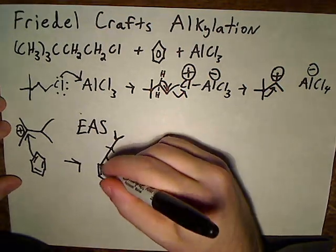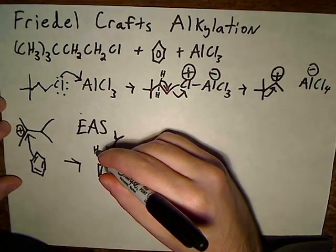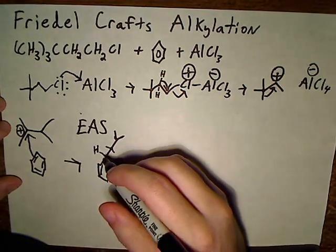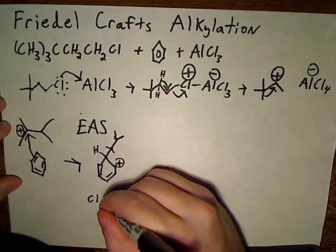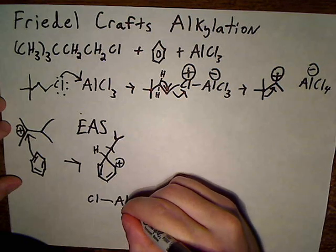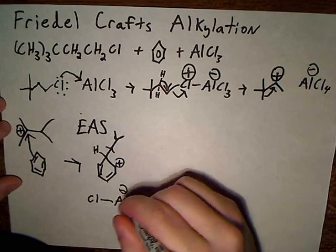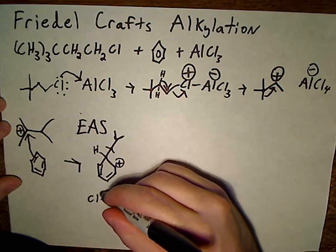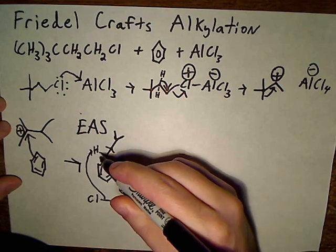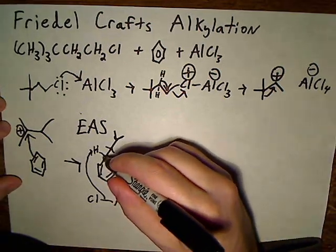So the way to restore aromaticity is there's also a hydrogen here and we're going to come back to our Lewis acid which is acting as a catalyst in this reaction. And what we're going to do is use these electrons to come in to take that proton and then these electrons come back in.